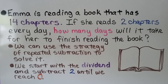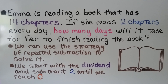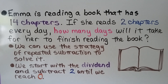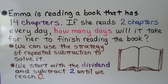Emma is reading a book that has 14 chapters. If she reads two chapters every day, how many days will it take her to finish reading the book? We can use the strategy of repeated subtraction to solve it. We start with the dividend 14 — that's how many chapters in all — and subtract 2 because she reads two chapters every day, until we reach 0.